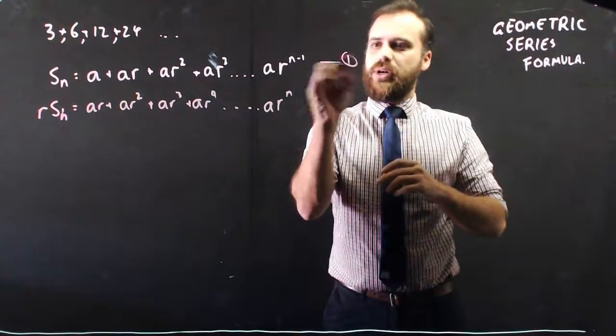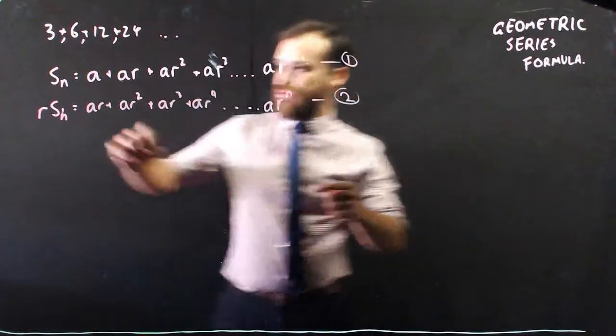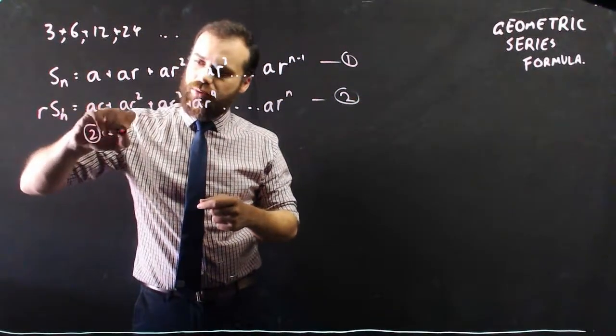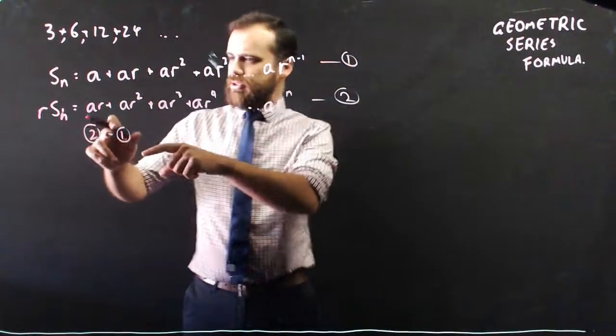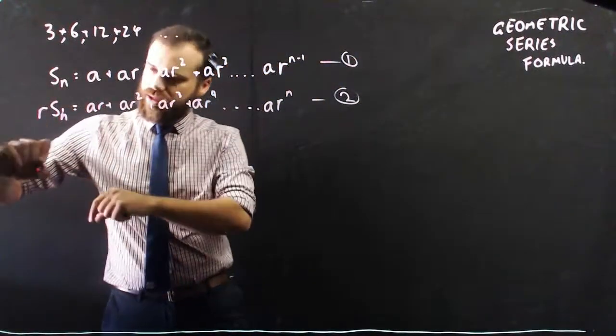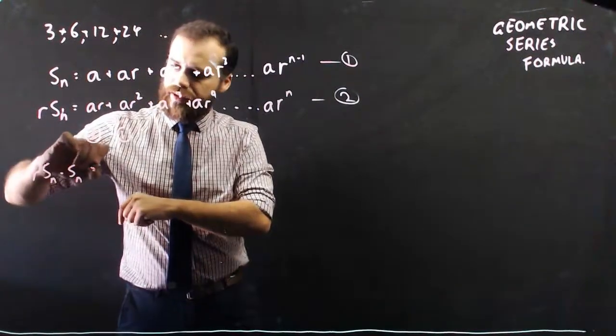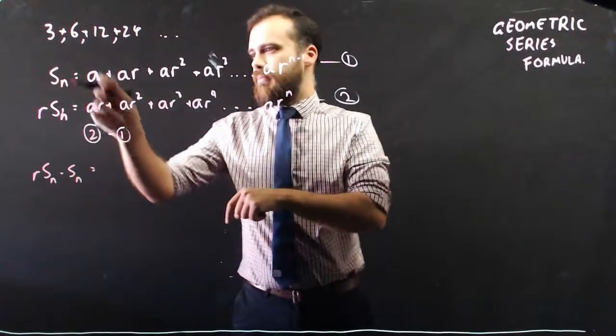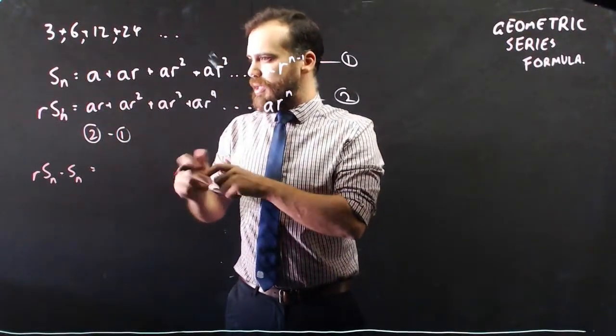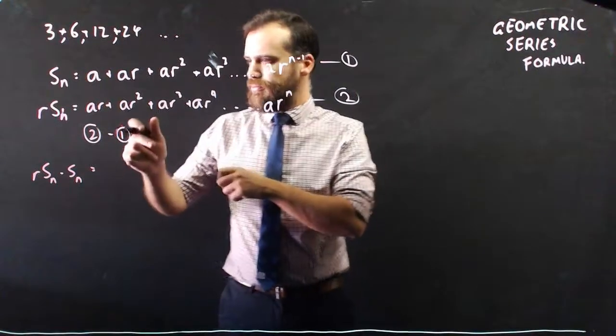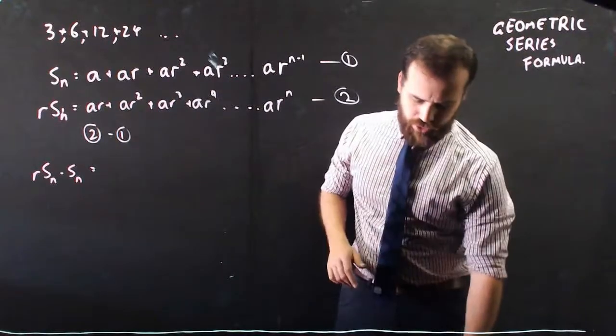Okay, now let's call that equation 1, let's call that equation 2, and let's subtract equation 2 from equation 1. Okay, so equation 2 minus equation 1. If I do that, so I do this minus this, so I get r*S_n minus S_n equals a*r minus a. Got really confused there, lost my train of thought.